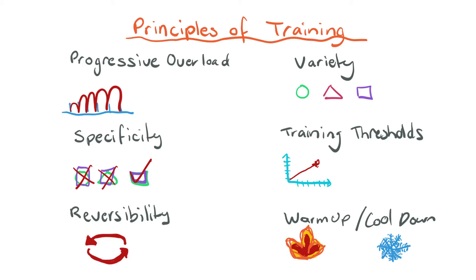Let's start by looking at the principles of training. We know from previous videos that four other principles are progressive overload, specificity, reversibility, and variety. Today we're looking at training thresholds, and in a future video we'll look at warm-up and cool-down procedures. These are all principles of training which can improve performance.